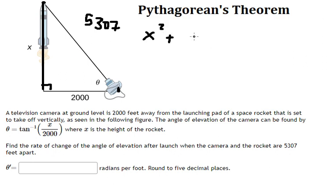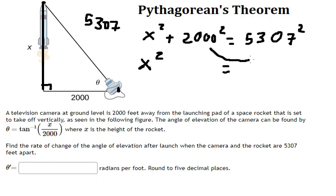plus 2,000 squared equals 5,307 to the power of 2. Now we need to find the value of x, so I will move 2,000 to the right side.